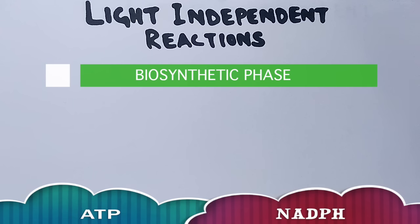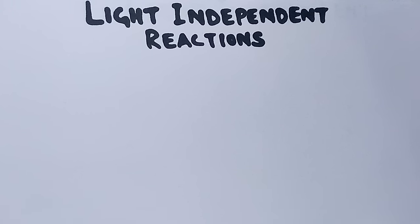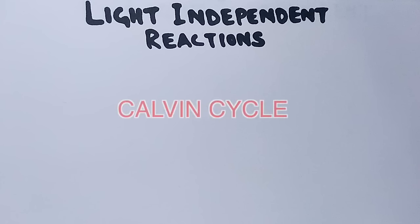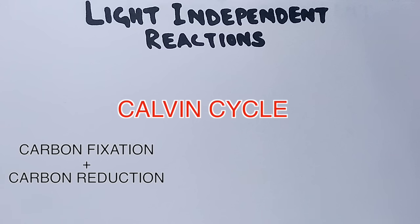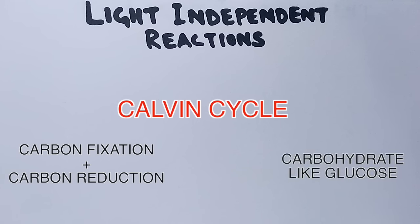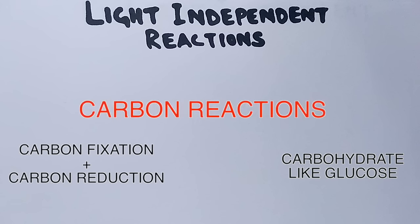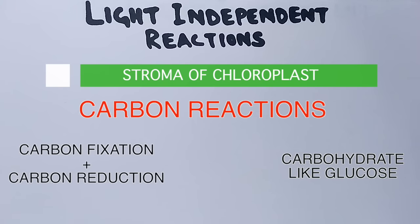The light-independent reactions occur through a cycle of reactions called the Calvin cycle. In this Calvin cycle, carbon dioxide is first fixed and then reduced into carbohydrates like glucose. These reactions are sometimes also called carbon reactions, and the Calvin cycle occurs in the stroma of the chloroplast.